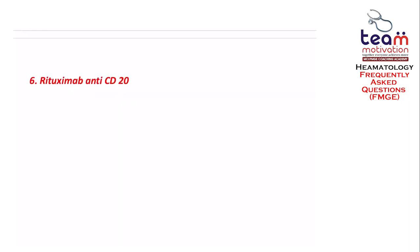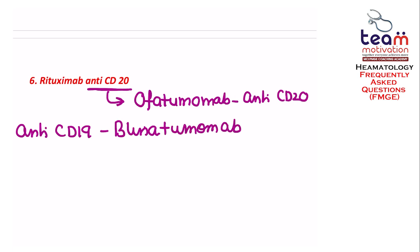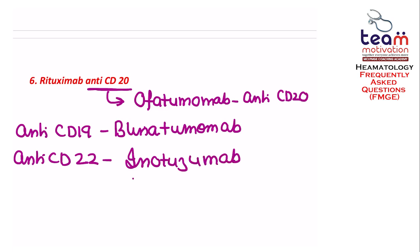The last question was about the monoclonal antibody rituximab. Rituximab is anti-CD20, and another anti-CD20 antibody is ofatumumab. Anti-CD19 is blinatumomab. Anti-CD22 antibodies include inotuzumab and epratuzumab. So remember anti-CD19, anti-CD20, and anti-CD22.